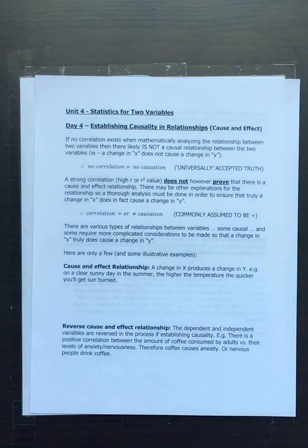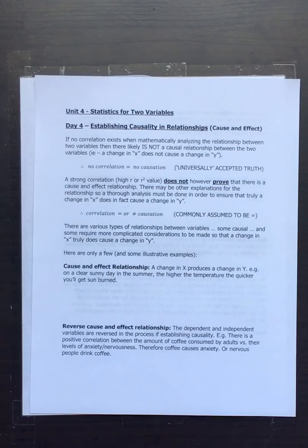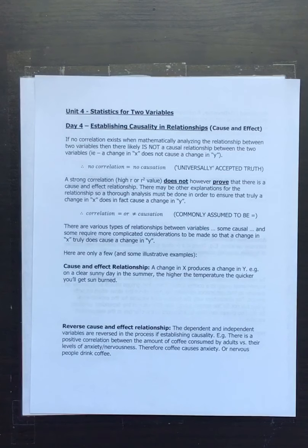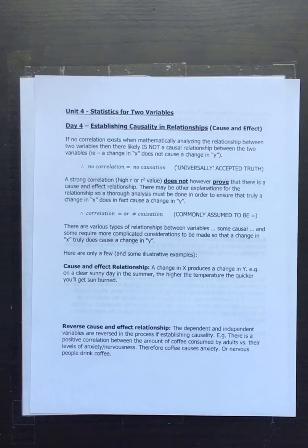This has to do with a causation analysis — an analysis of causality. There are some fallacies that exist, so when we see a correlation, we have to decide whether or not there actually is causation, because correlations can exist without causation at all.